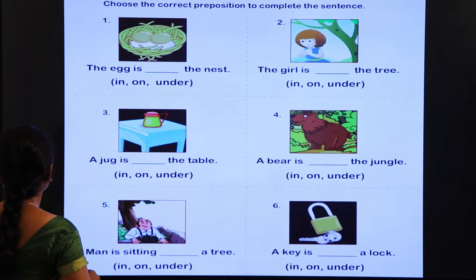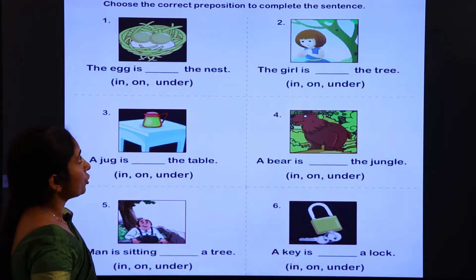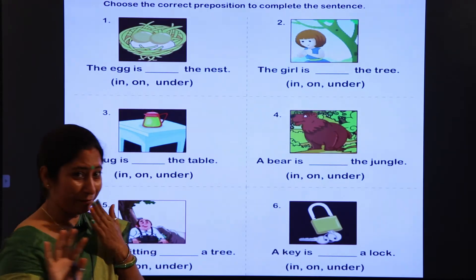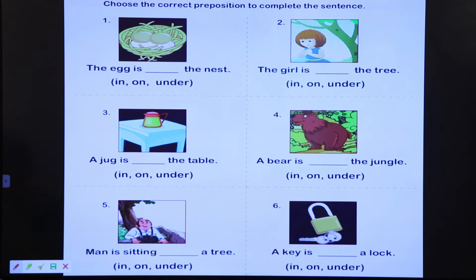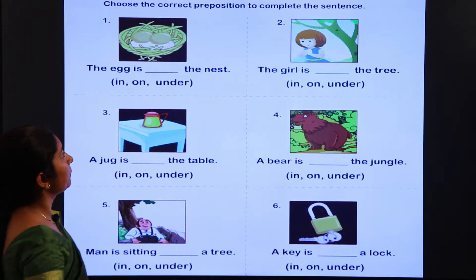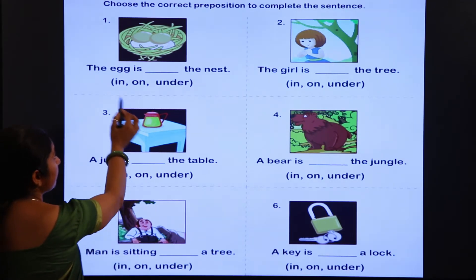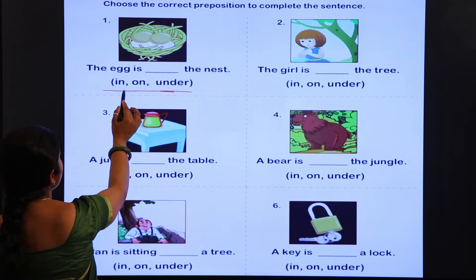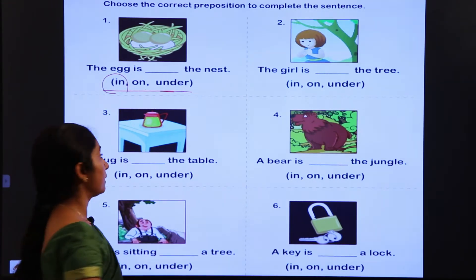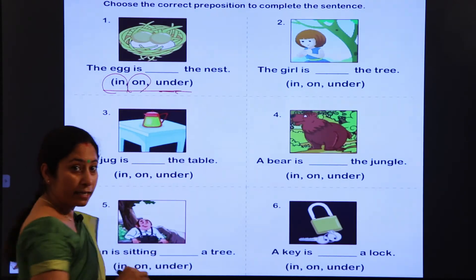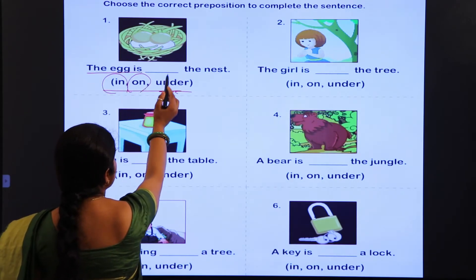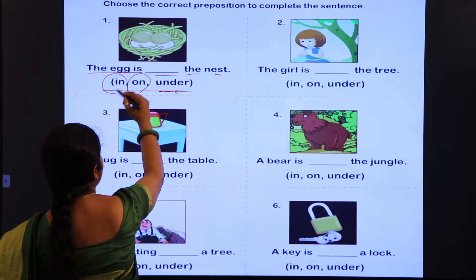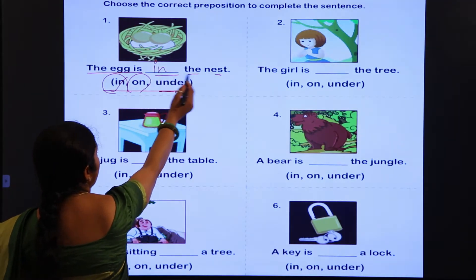Choose the correct preposition to complete the sentences. Aapne correct preposition — means in, on, under — ka use karna hai aur in sentences ko complete karna hai. Jaise ki maine aapko bataya tha: 'in' hota hai kisi cheez ke andar koi cheez rakhi hui hai, 'on' means upar, aur 'under' means uske niche. Toh dekhiye — the egg is [dash] the nest. Egg kahan par hai? Nest ke andar. Toh hum yahan par 'in' put karenge: the egg is in the nest.